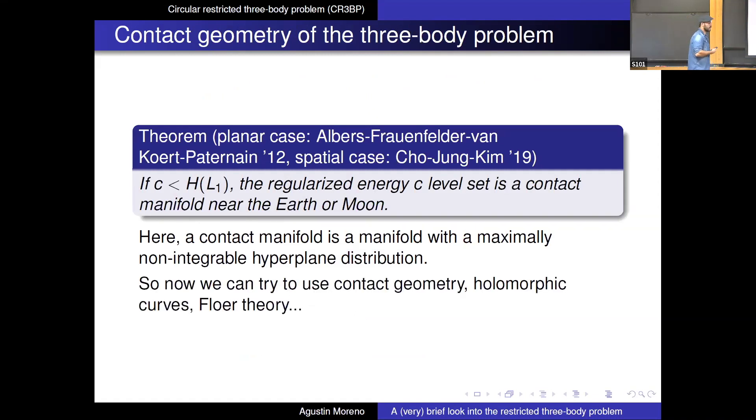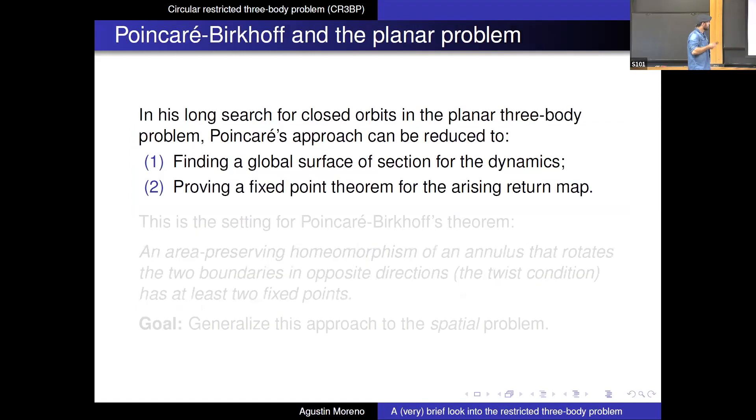So the whole point of this theorem is that we can now try to use contact geometry and the modern tools like homophobic curves or fluid theory and you name it. So this is the general direction that I would like to take. But before I do that, sort of let me tell you a bit about a very rough sort of point on the history of this problem, especially about what Poincaré was actually trying to do, right?